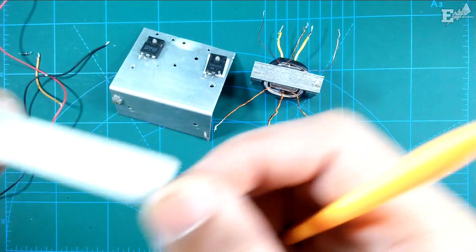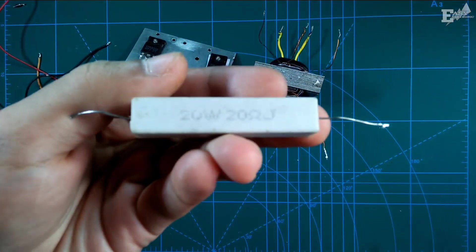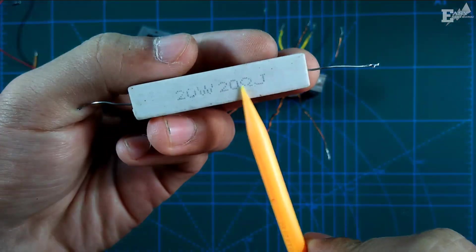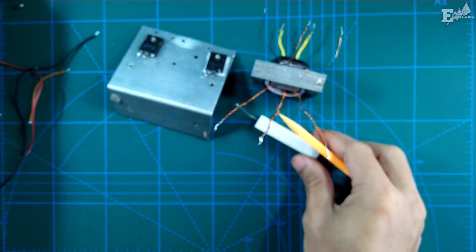Then next, this is a 20 ohm resistor, 20 ohm, 20 watt, with code 20J.